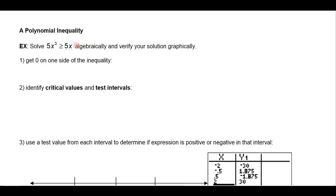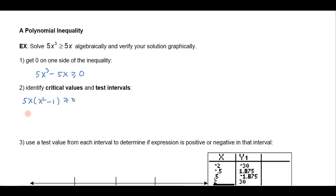The first thing you want to do when you solve any nonlinear inequality is get zero on one side. So I'm going to bring the 5x over to the other side and get 5x cubed minus 5x is greater than or equal to zero. Now I can factor that — let's factor a 5x out, which leaves x squared minus 1. I can factor that still further as the difference of squares: that's x plus 1 times x minus 1, greater than or equal to zero.